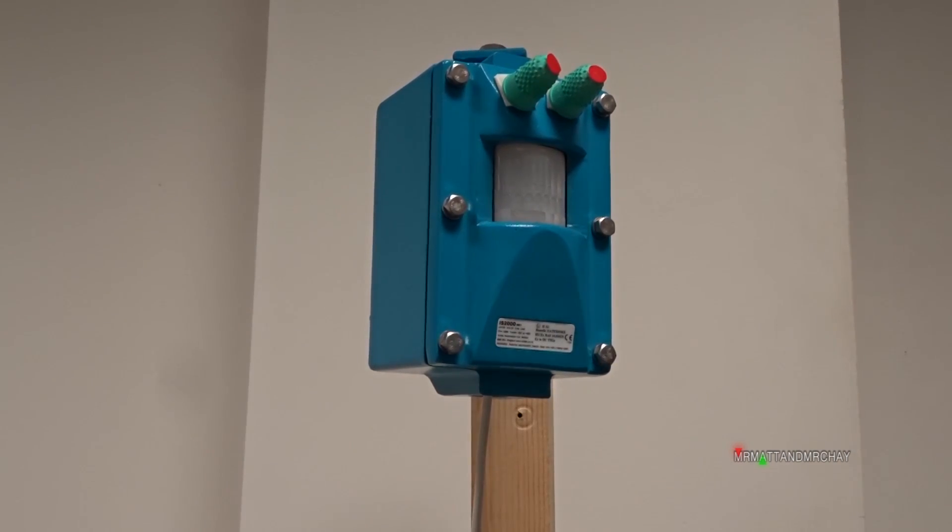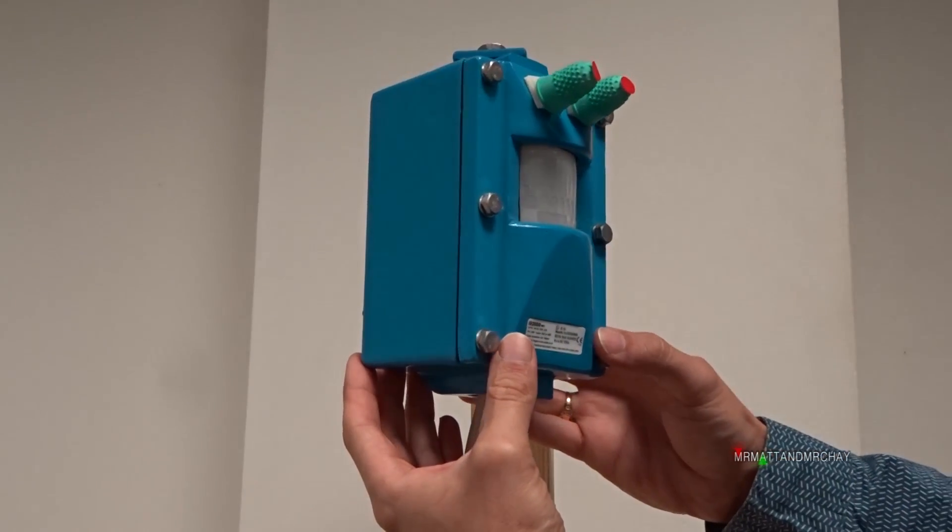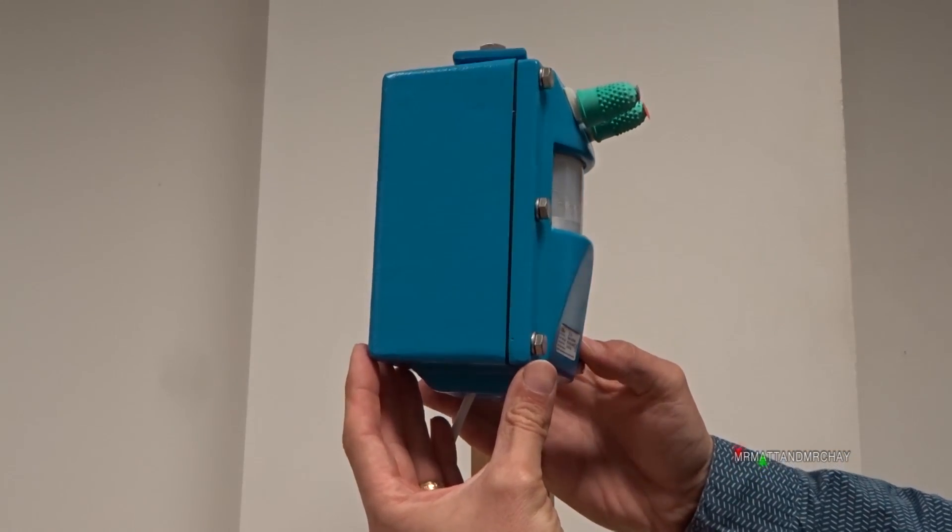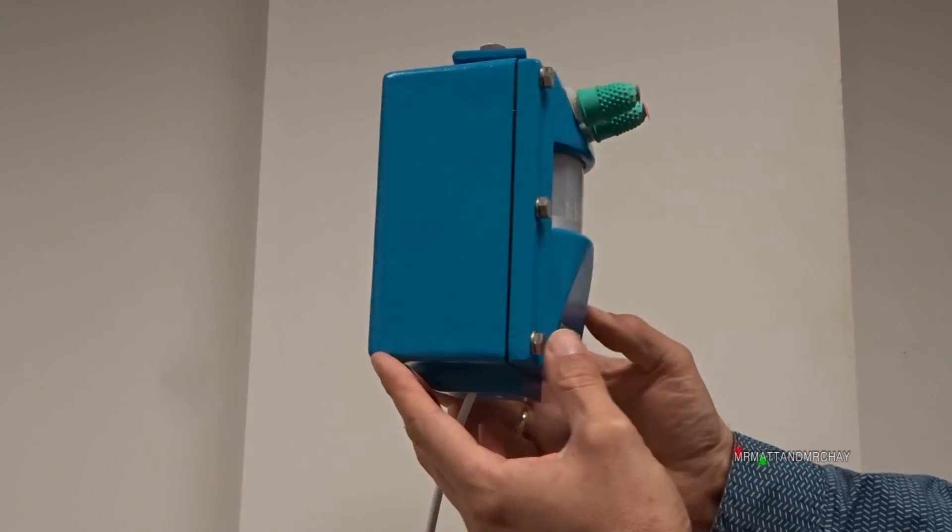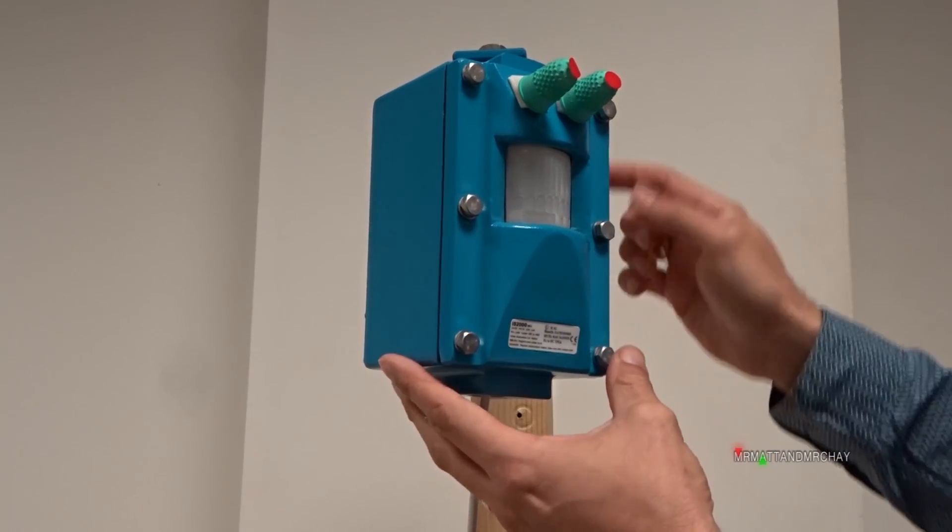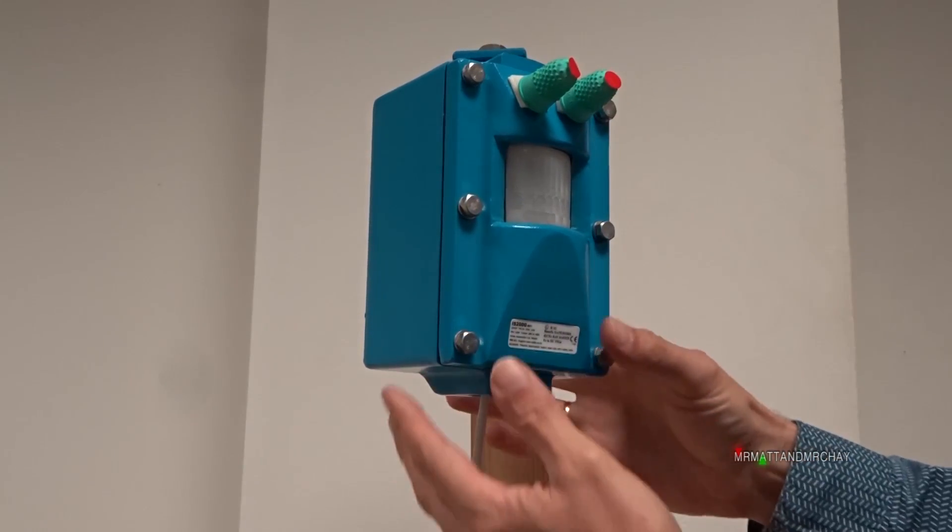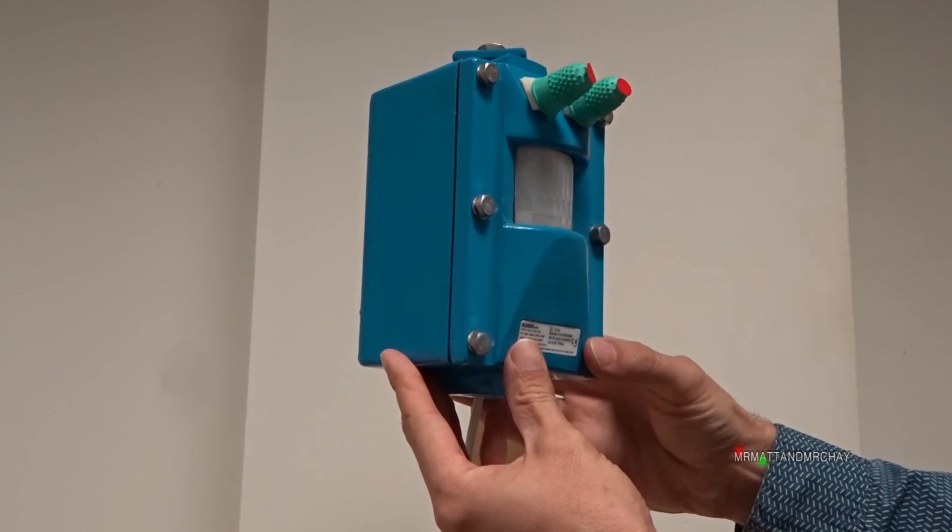So ignoring the eye accessories, what does this do? It's a motion sensor, but you can see that it's made out of metal and it's massive. It even has to go on a bracket. So how does this differ from a normal detector?